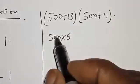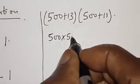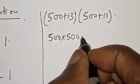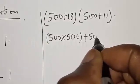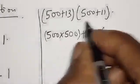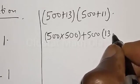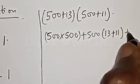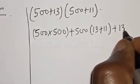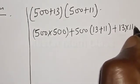Then from here, we have 500 multiplied by 500 plus we have 500 into 13 plus 11 plus 13 multiplied by 11.